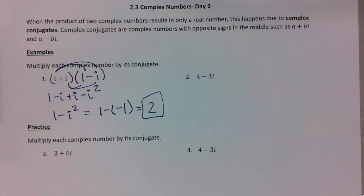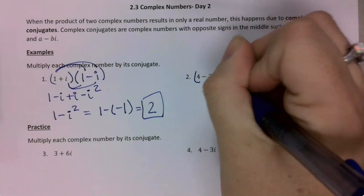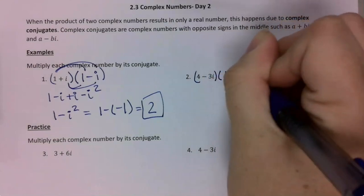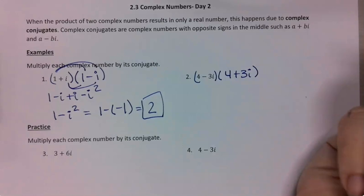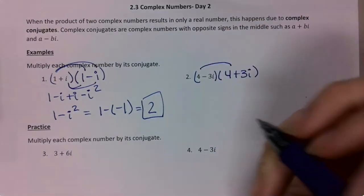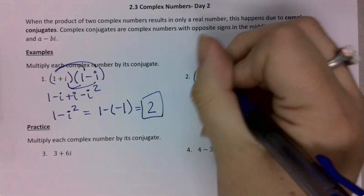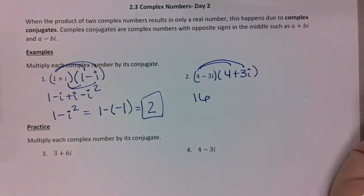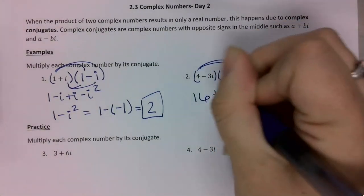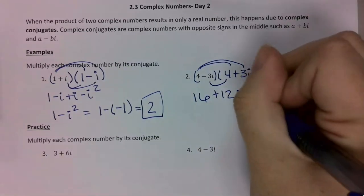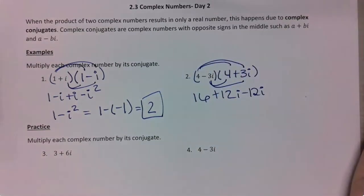For number 2, I just change the sign in the middle, so the conjugate is going to be 4 plus 3i. Then I want to go ahead and multiply: 4 times 4 is 16, 4 times 3i — and then negative 3i times 3i.